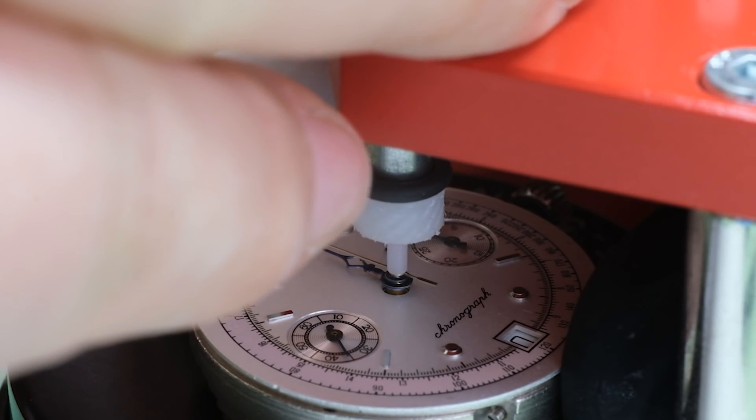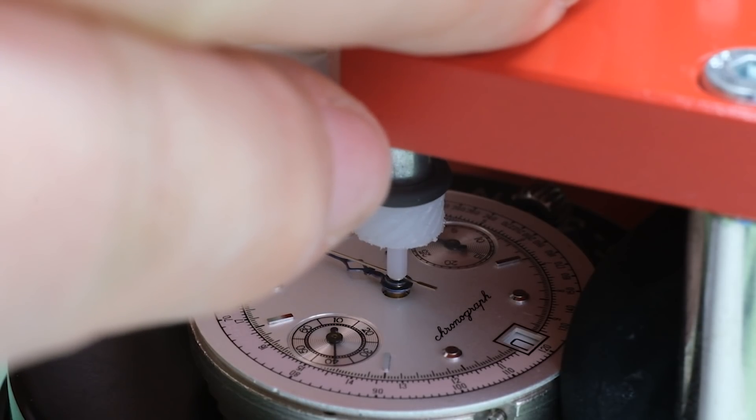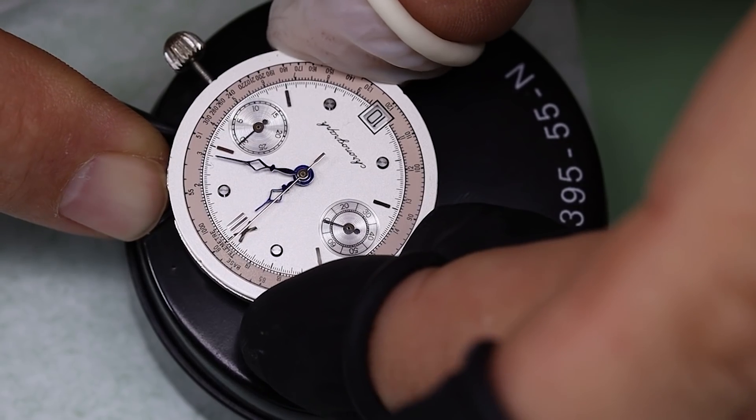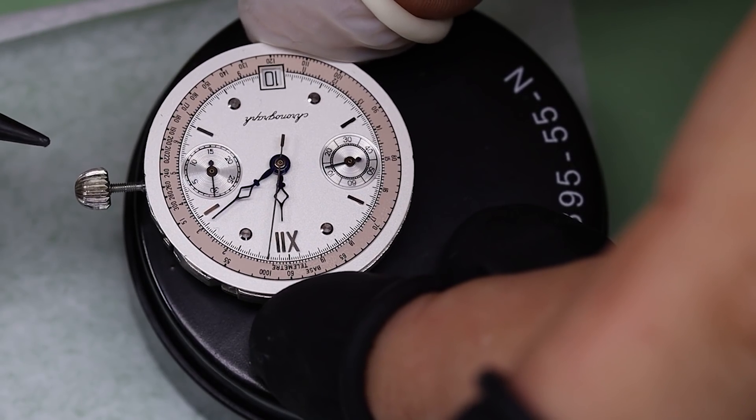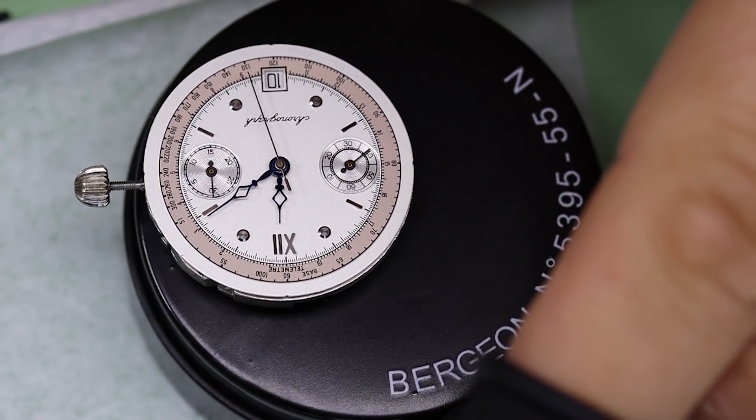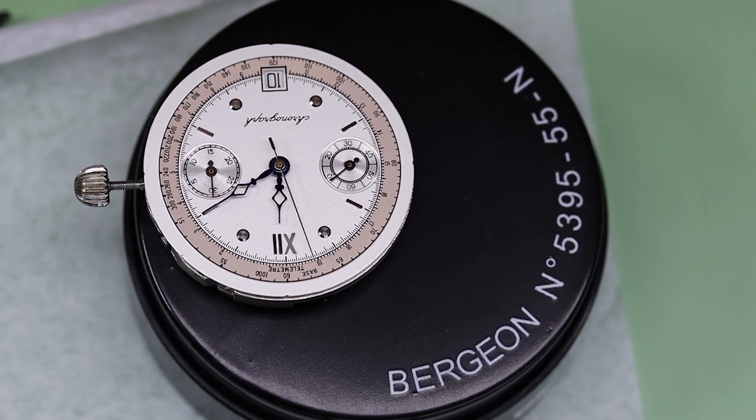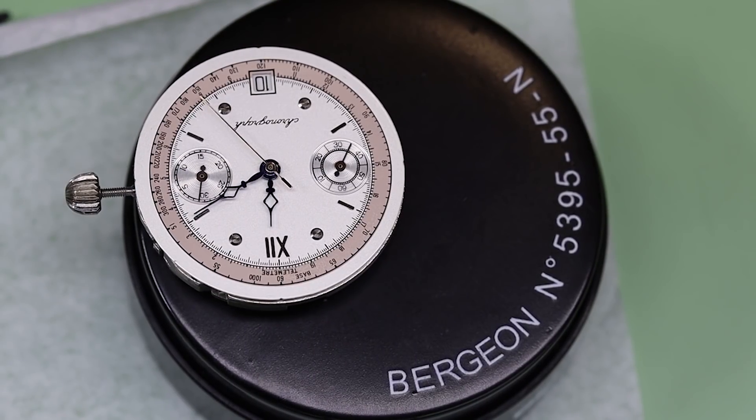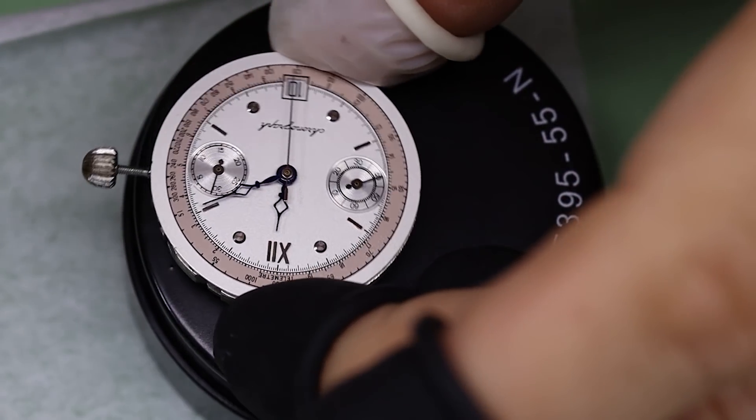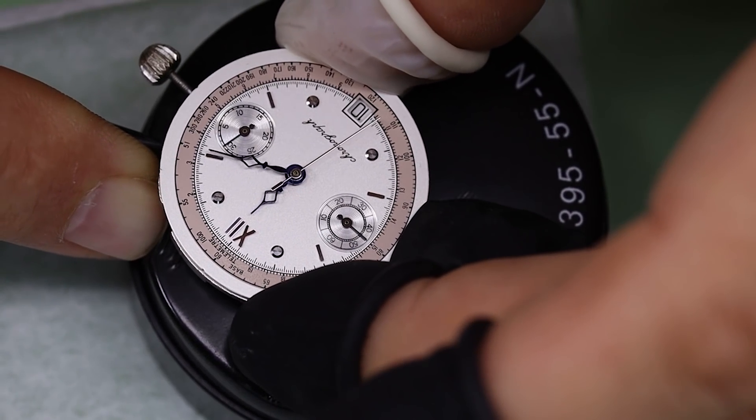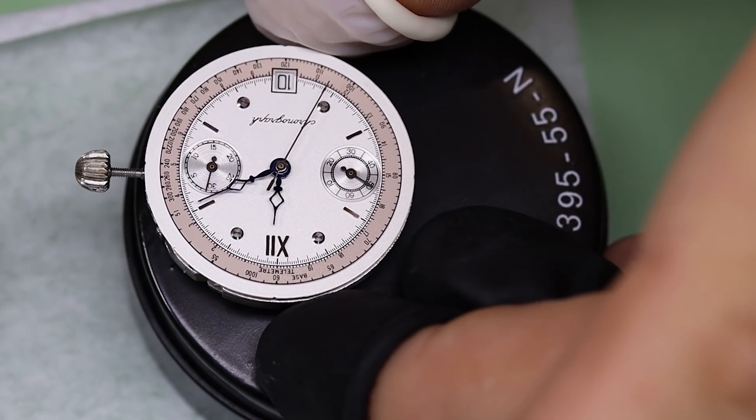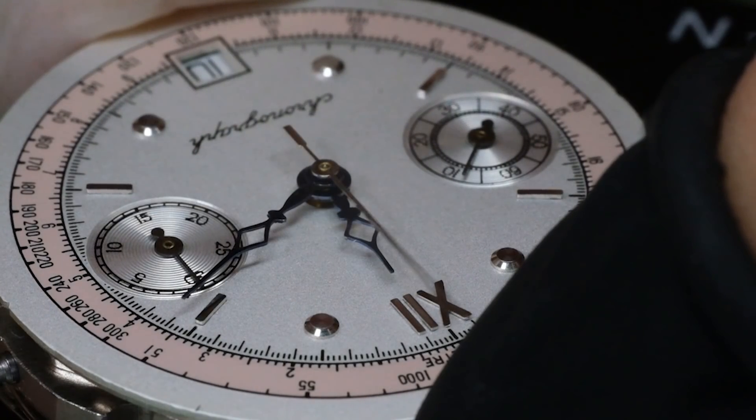All right, we've almost got all the hands on, just the trickiest left, which is the central chronograph seconds hand. And then we can test the chronograph. Let's speed that up a little bit as well. We're keeping an eye on the minute counter. And that looks fine. Now we can pause the watch, start it again, pause it, and reset it. Yep, looks all right.